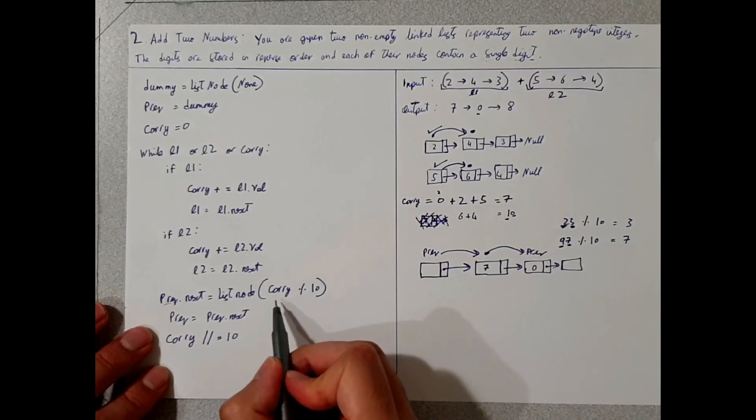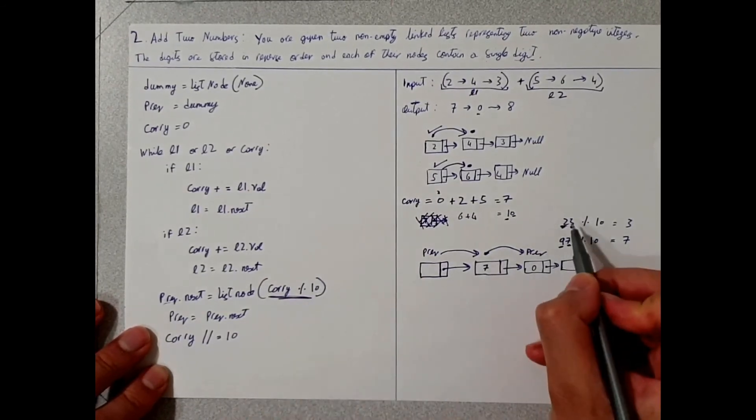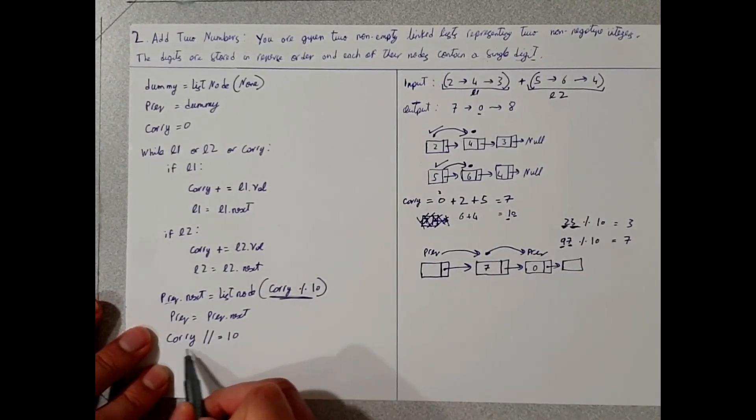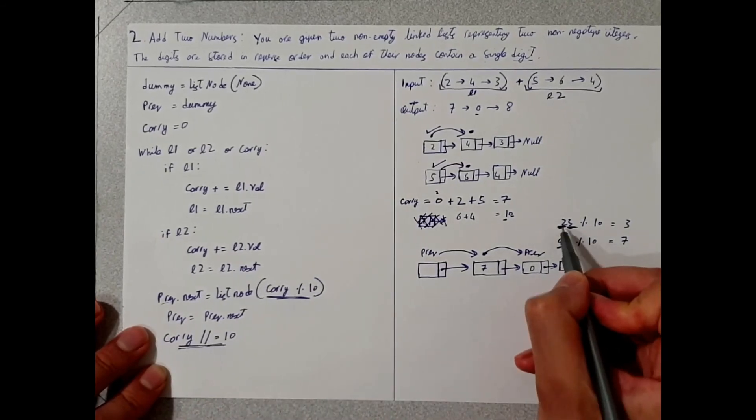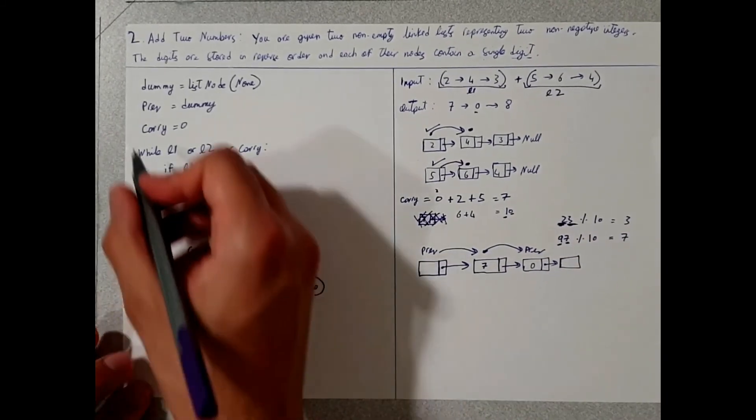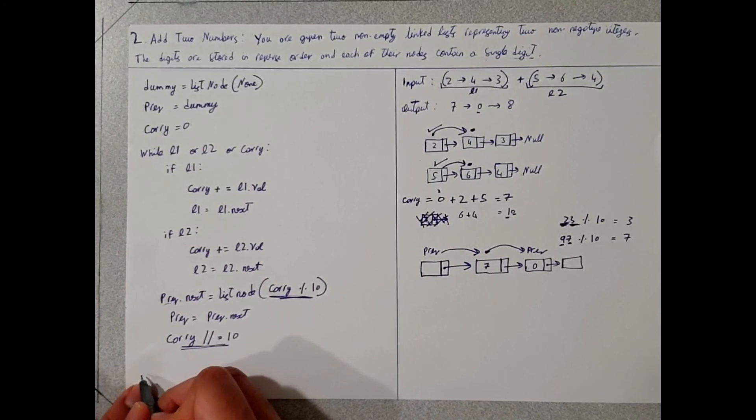So the last thing we want to do is carry integer division 10. So this part here takes in the rightmost value, and this part here takes in the leftmost value. And then at the exit of this while loop,